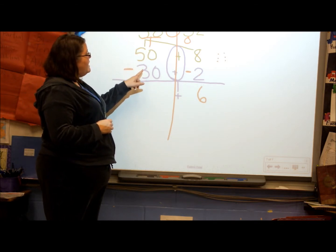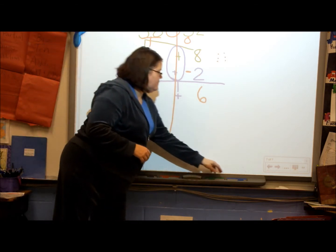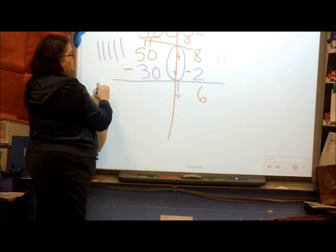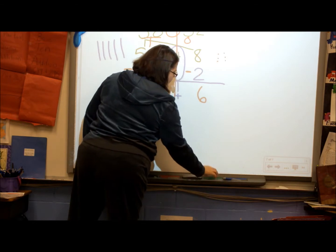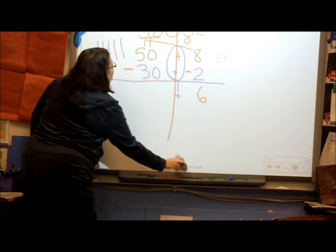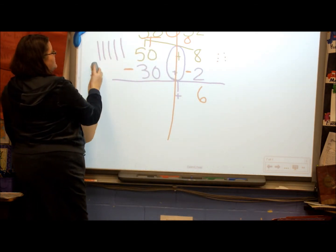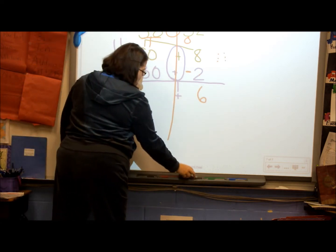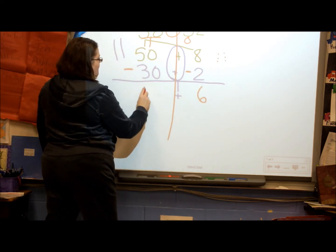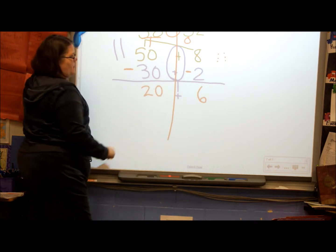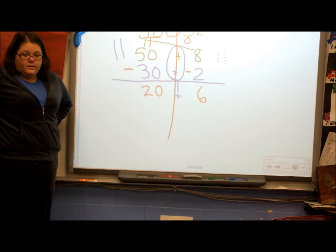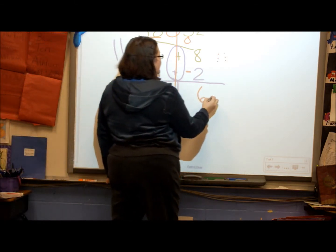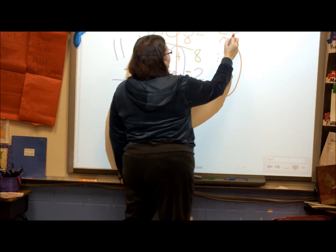Now, 50 minus 30. Sorry, you're right. I said that wrong. 50 minus 30. I'm going to take away three tens. My answer left over is 20. So, when we smush the number back together, my answer ends up being 26.